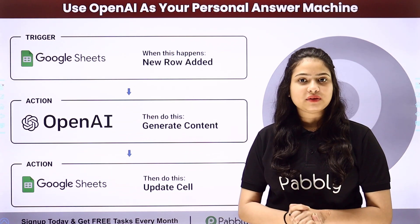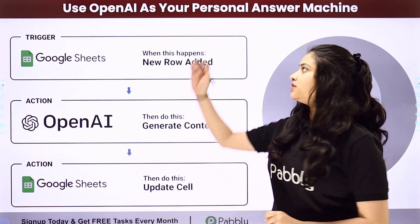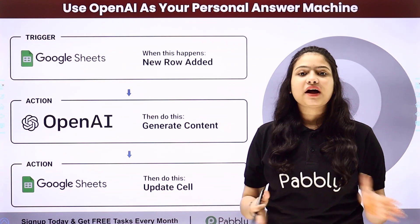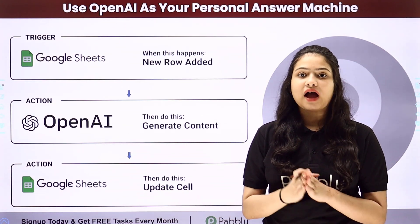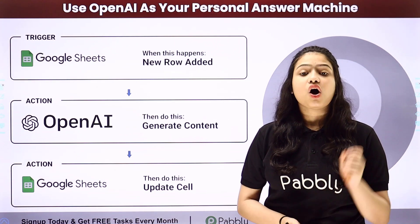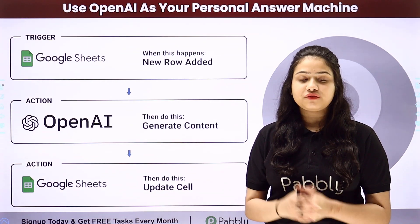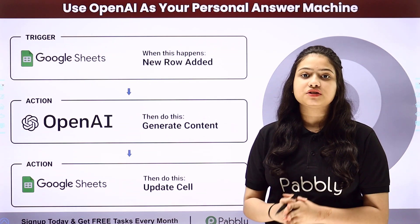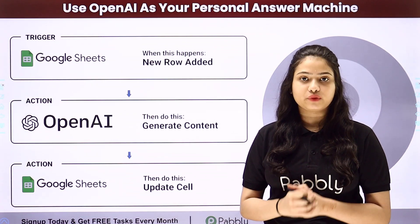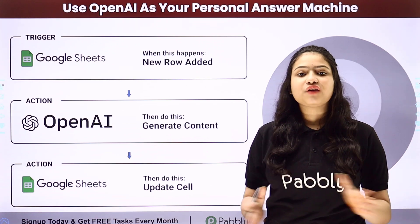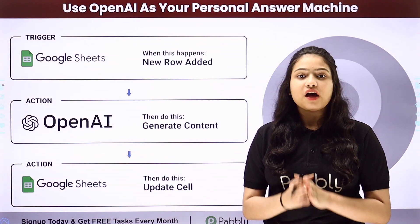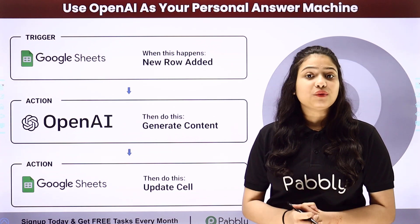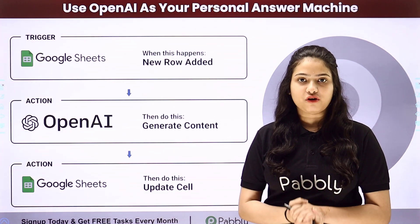Hello everyone, welcome back to Pabbly Connect. In this video we are going to learn how to use OpenAI as your personal answer machine. My objective is that as soon as I add a new question in my Google Sheets, automatically an answer should be generated for that question using OpenAI, and the same generated answer should be added automatically in front of the question in my Google Sheets. We are going to automate this entire process without any coding or programming skills with the help of Pabbly Connect.